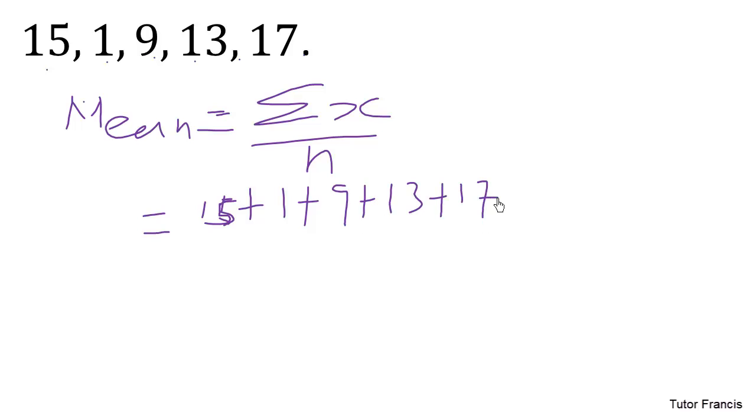Since the standard deviation has something to do with the mean, we have to first of all calculate the mean. So the mean of these data sets is given by the sum of all these x values divided by the number of items. When you sum all these, we have 15 plus 1 plus 9 plus 13 plus 17, all divided by 5. So when you sum all these we get 55 over 5, and this will give us 11.